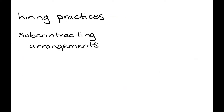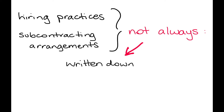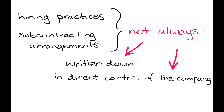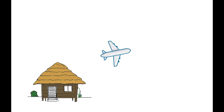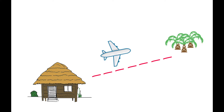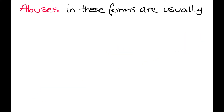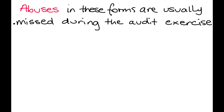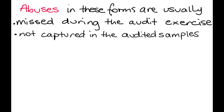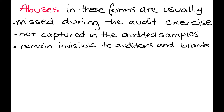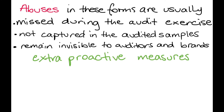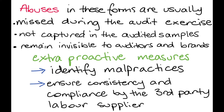Secondly, practices which are somewhat complex, such as hiring practices or subcontracting arrangements, are not always written down or in direct control of the company. Sometimes the point of origin of the violation may originate from abuses caused by labour contractors or suppliers at the point of recruitment in the home countries of workers. Abuses in these forms are usually missed during the audit exercise, or not captured in the audited samples, and often remain invisible to auditors and brands, unless extra proactive measures are taken by the companies to identify malpractices and ensure consistency and compliance by the third-party labour supplier.